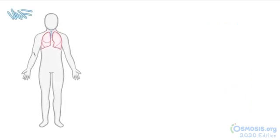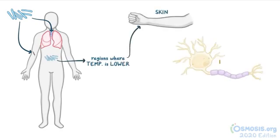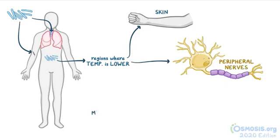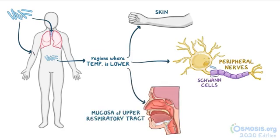Mycobacterium leprae can enter the body through the lungs or broken skin. Once inside the body, it goes for regions in which the temperature is lower than the rest of the body, like the skin, peripheral nerves, and mucosa of the upper respiratory tract. The bacteria goes for the Schwann cells of peripheral nerves.